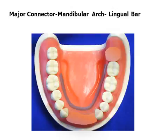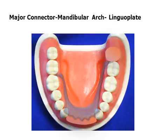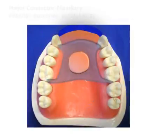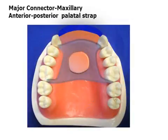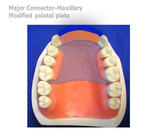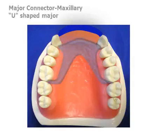The mandibular major connector will usually consist of a lingual bar or linguoplate, although a labial bar may be used in certain instances. The maxillary major connector may be an anterior-posterior palatal strap, commonly used in the presence of a maxillary torus. The modified palatal plate may be selected, or, in cases of low gagging threshold, the U-shaped major connector may be used.